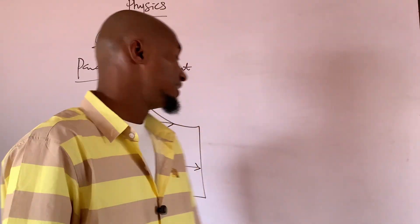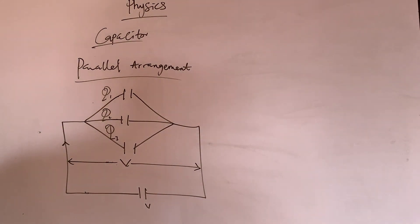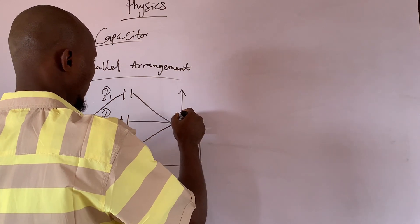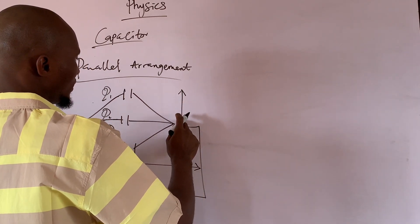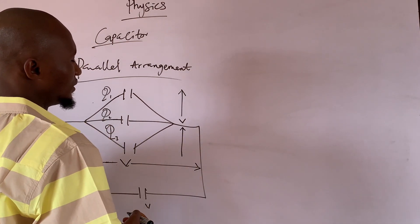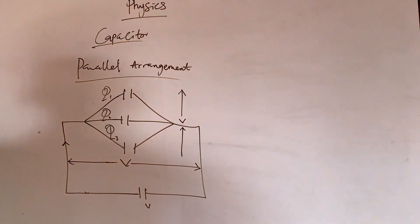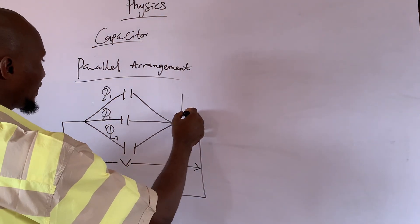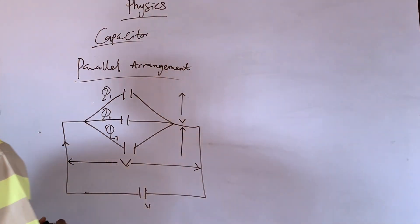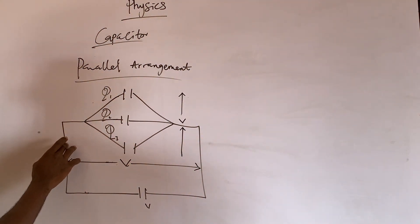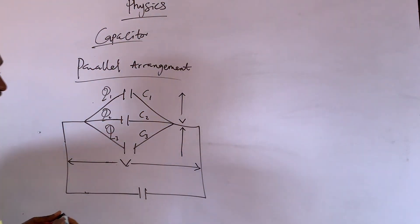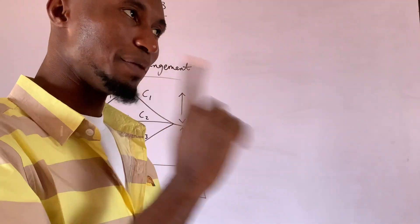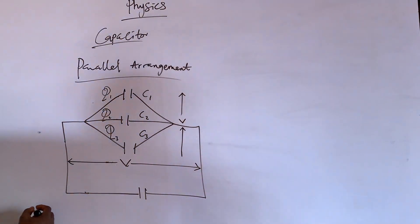Now, I told you that parallel arrangement, which is the first arrangement of capacitance, for capacitor where you have the same voltage across each capacitor but different charges. Now look up here, we have V here. Let me put the arrow like this so that you get it better. Here is C1, C2, C3, and what does this C stand for? It stands for capacitors.